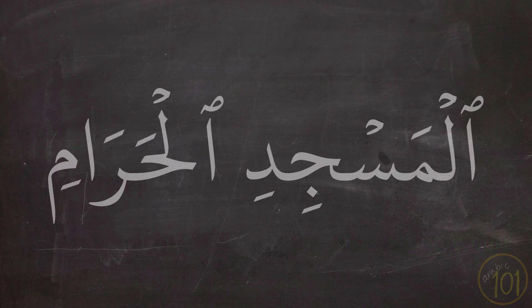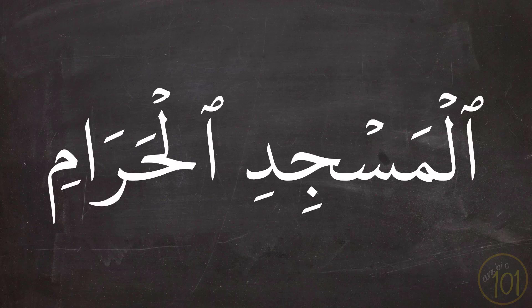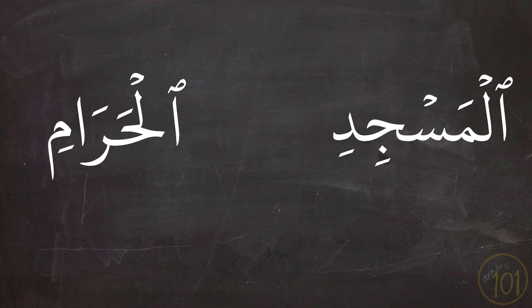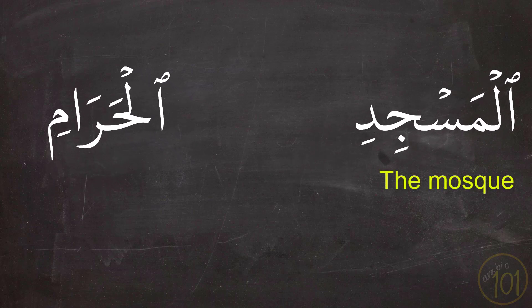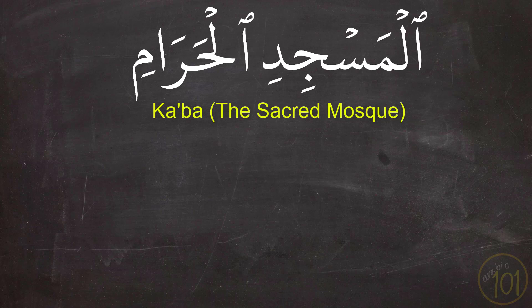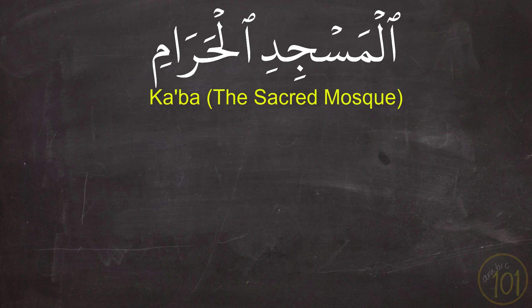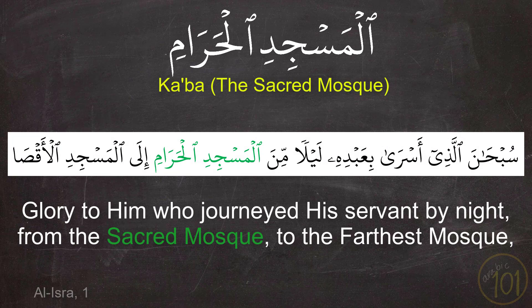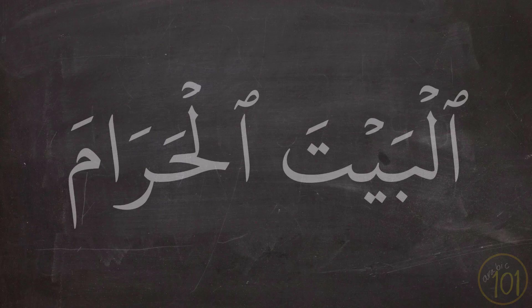Next is the combination الْمَسْجِدِ الْحَرَامِ, made up of الْمَسْجِدِ, meaning 'the mosque,' and الْحَرَامِ, meaning 'the forbidden.' This combination refers to the Kaaba or Al-Haram. We see it in the example: سُبْحَانَ الَّذِي أَسْرَىٰ بِعَبْدِهِ لَيْلًا مِنَ الْمَسْجِدِ الْحَرَامِ إِلَى الْمَسْجِدِ الْأَقْصَى.